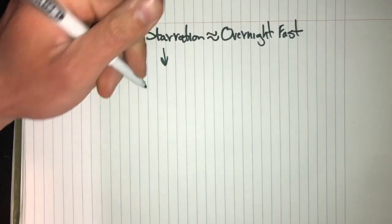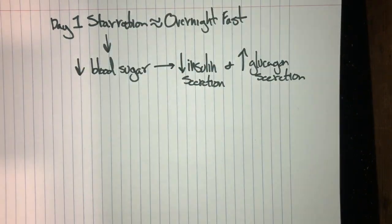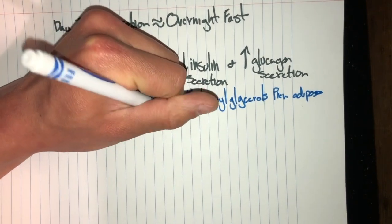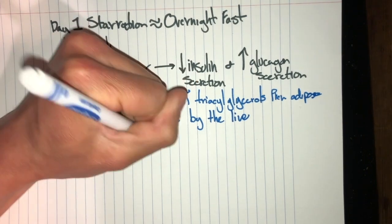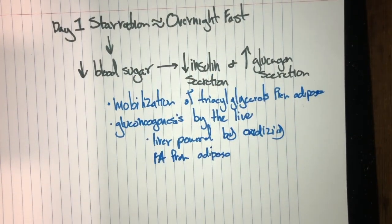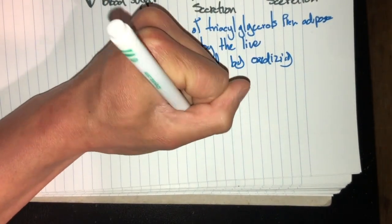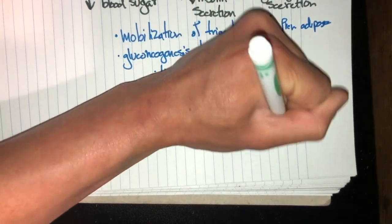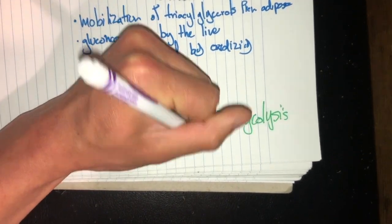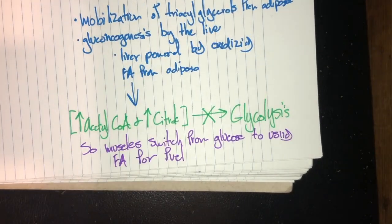All right, moving on. On day one of starvation, we see a lot like what we talked about with the overnight fast earlier. We see a decrease in blood sugar, a decrease in insulin secretion, and an increase in glucagon secretion. So we see a mobilization of triacylglycerols from the adipose tissue and gluconeogenesis activated in the liver. The liver is powered by oxidizing fatty acids from adipose tissue. In fact, these steps make for an increase in acetyl-CoA and citrate. These will turn off glycolysis. And the intake of glucose by muscle is diminished due to low insulin levels, while fatty acids can enter freely. So muscles now use no glucose.